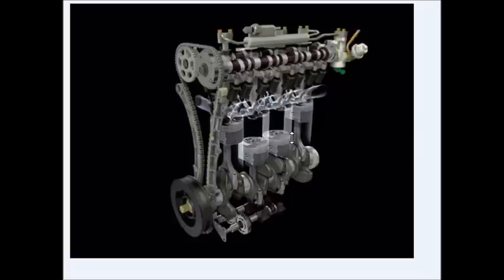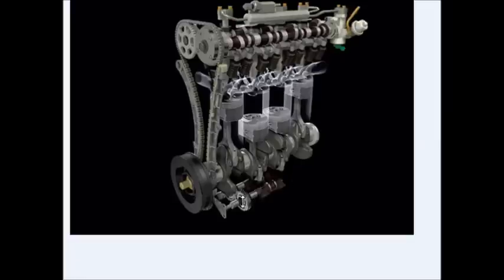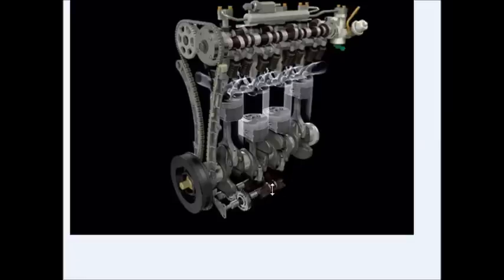However, the inline four is not inherently smooth and balanced like the inline six. Expensive four-cylinder engines, like in the Honda, they're going to have a set of balance shafts, two shafts spinning in opposite directions joined by these gears that rotate in different directions. These are called counter-rotating balance shafts, and these actually spin at twice the engine speed.